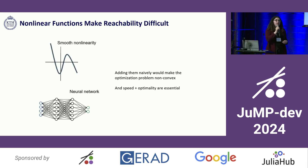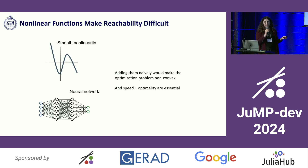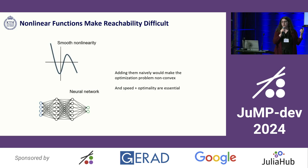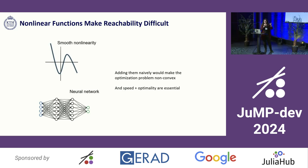There are some things that make reachability analysis difficult. For linear systems, it's pretty fast and pretty straightforward, but I'm particularly interested when we have difficulties like smooth nonlinearities in the dynamics and neural networks in our control policy or perhaps somewhere else inside our closed-loop feedback system. Adding them naively to the optimizer would make the problem non-convex, which is not what we want here because speed and optimality are essential.